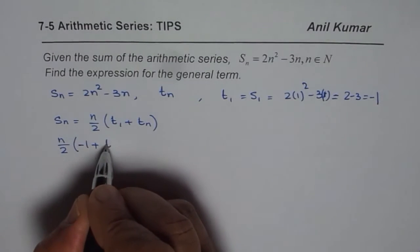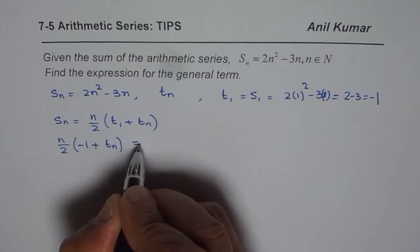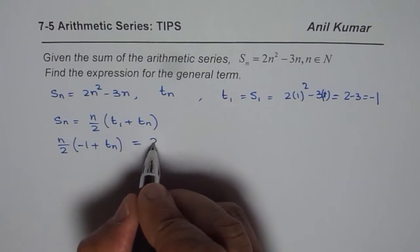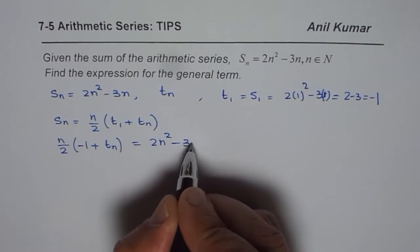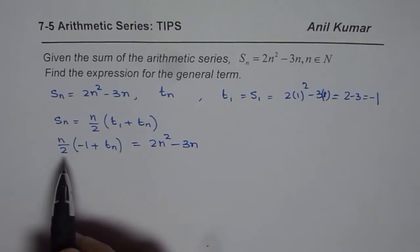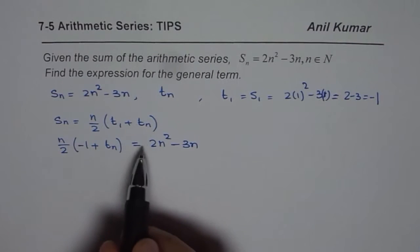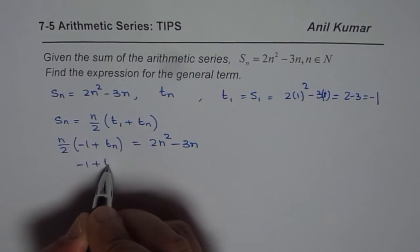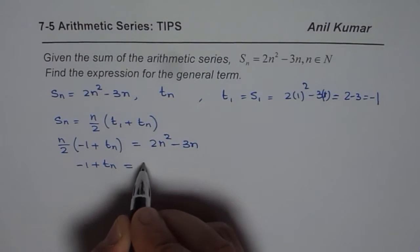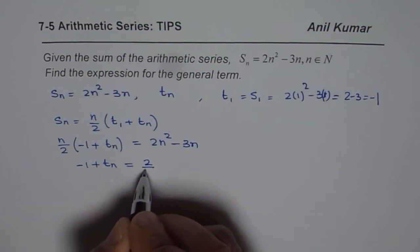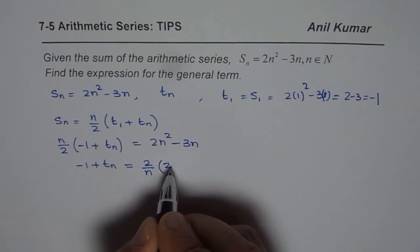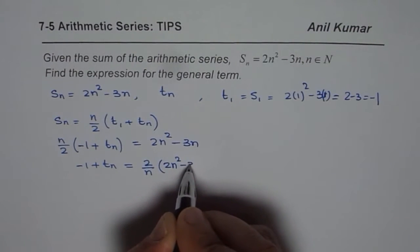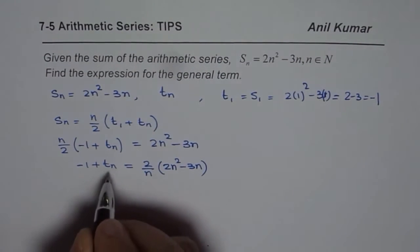equals the expression given to us as 2n² minus 3n. Now let's rearrange. We will multiply these terms by 2 divided by n. So we get minus 1 plus t_n equals 2 over n times 2n² minus 3n.